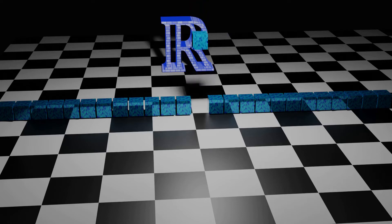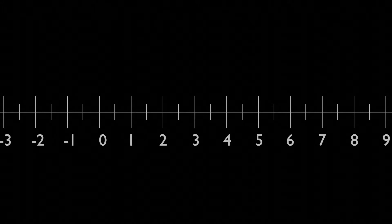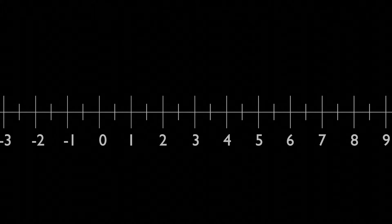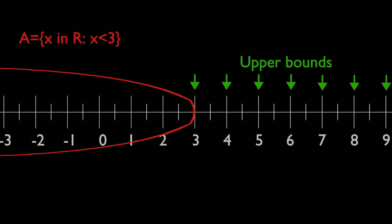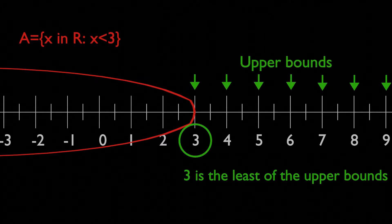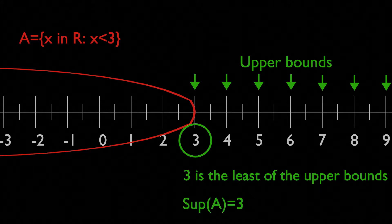In today's video we will explore the completeness property of the real numbers. Let's define first the upper bound of a set. An upper bound of a given set is an element that is greater than all the elements of the set. We call supremum the least of the upper bounds, if there is one.